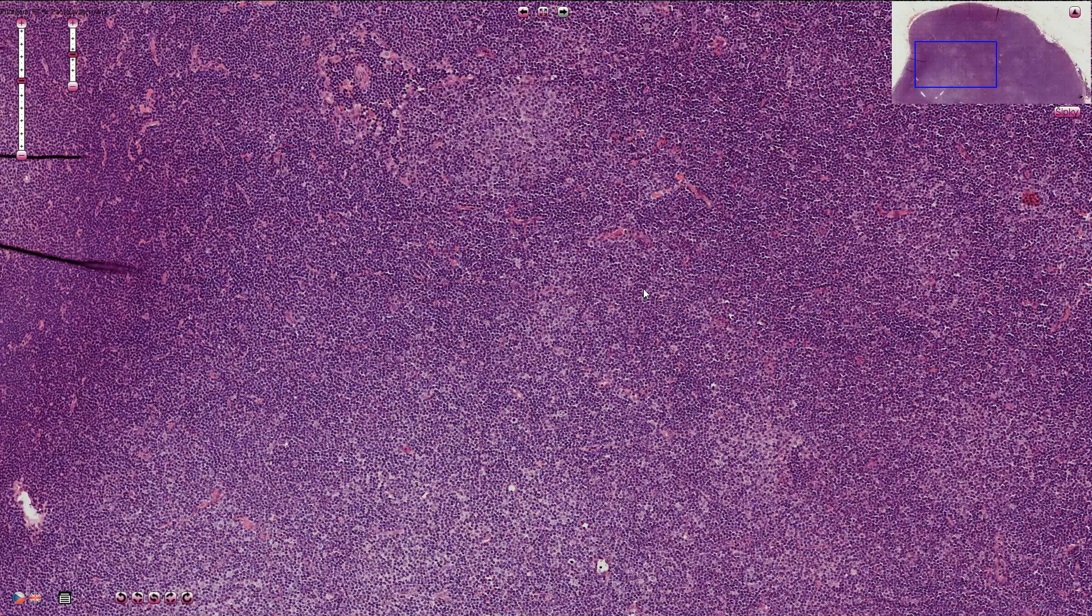So we always need to use immunohistochemistry. Now the malignant cells in case of follicular lymphoma would have immunophenotype of germinal center B cells. So they will be BCL2 positive and CD10 positive, and CD5 and CD23 negative.